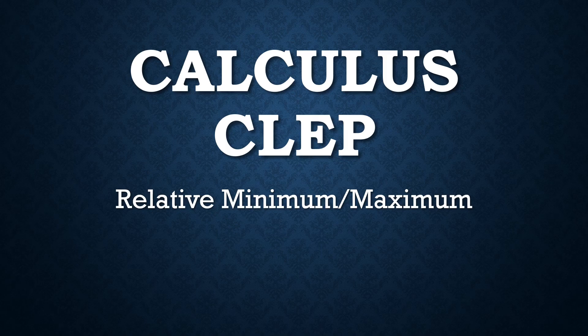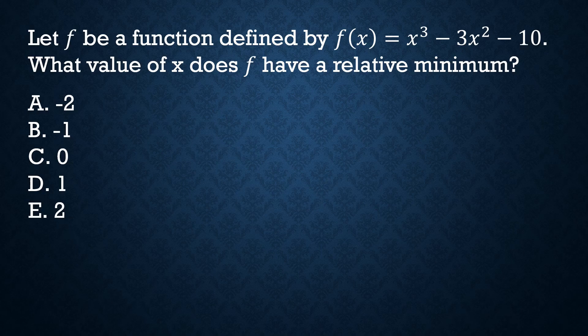In this Calculus CLEP video, we're going to discuss how to find a relative minimum or maximum of a function. This problem says let f be a function defined by f of x equals x to the third minus 3x squared minus 10. What value of x does f have a relative minimum?